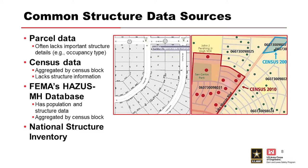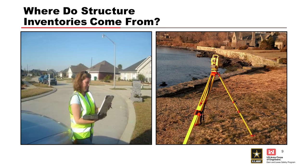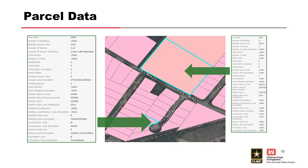This is an example of common structure data sources. Hopefully you believe that you need a structure inventory — so how can you get one? Someone has to make it. If you had all the time in the world, you would essentially do a census and personally confirm every attribute of every structure in your floodplain. In recent years, most studies create structure inventories using other people's data.